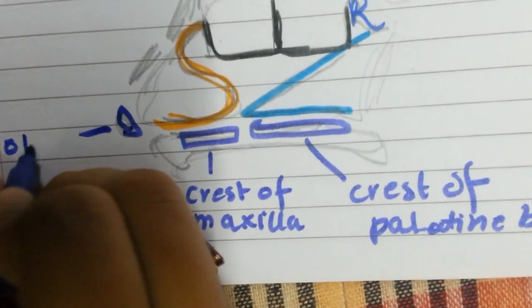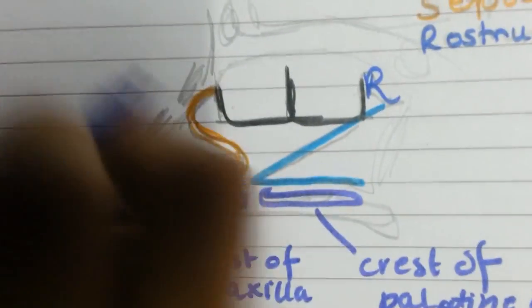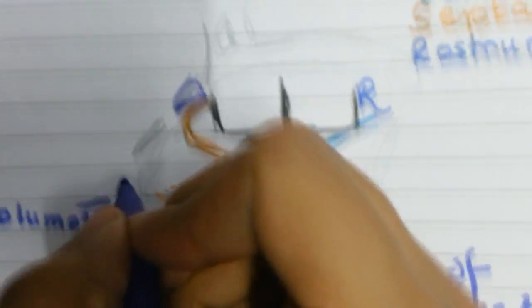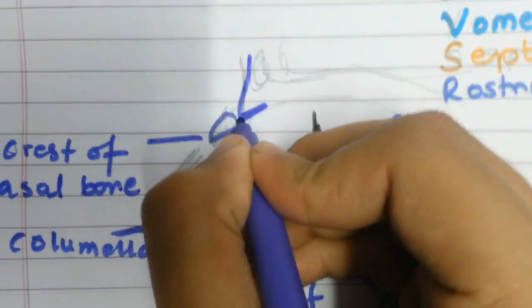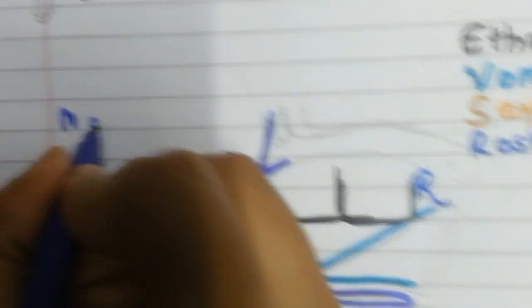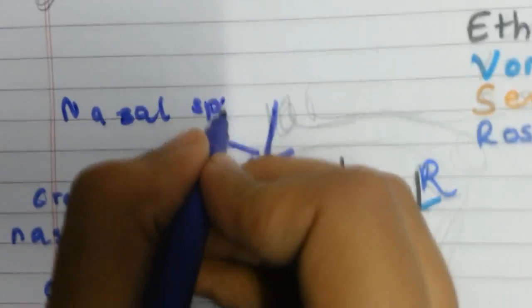This is the crest of the nasal bone, and this is the nasal spine of the frontal bone. I know it looks like my hand is trembling here, but I was just adjusting the camera so you can see.